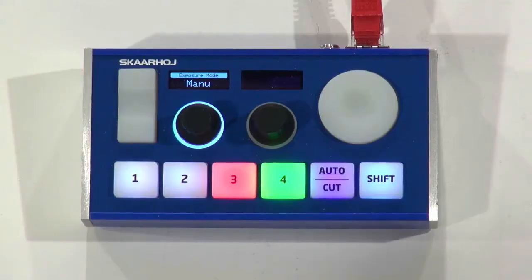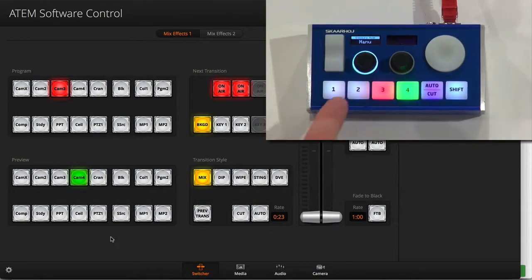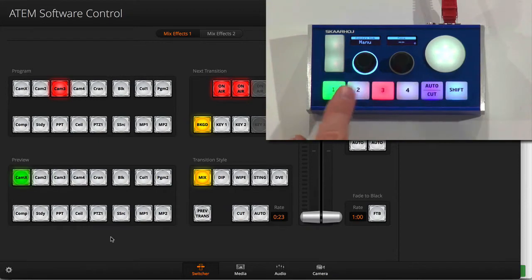So let's see how that works. And here's the controller again, and we'll just bring up the ATEM software control. So you can see as I press these buttons, I am indeed selecting sources on the preview bus. And when I press the cut button, I am cutting between these sources as well.